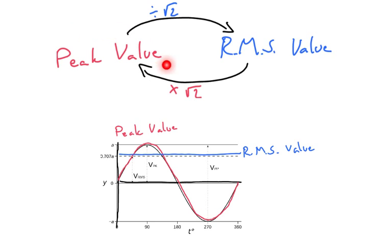So, to convert from the peak value you've got here, you simply divide by root 2, and that will give you the RMS value.